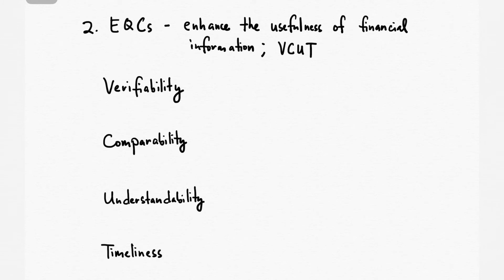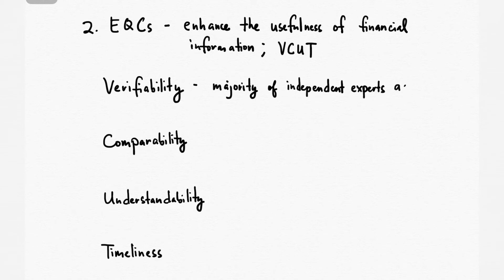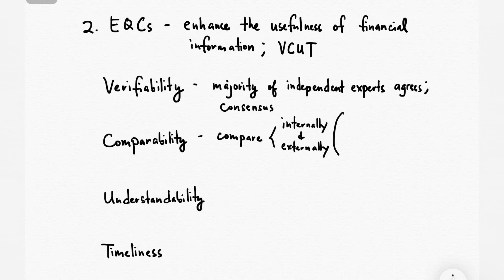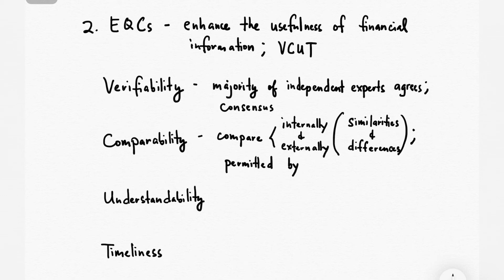An information will be verifiable if the majority of independent experts agrees to the information, or there is a consensus among them about the information. For the second one, comparability — an information is comparable if you can compare the information internally and externally. For this, you will be looking for similarities and differences, and this is permitted by an accounting concept called consistency, wherein you will be using the same accounting treatment given the same items.